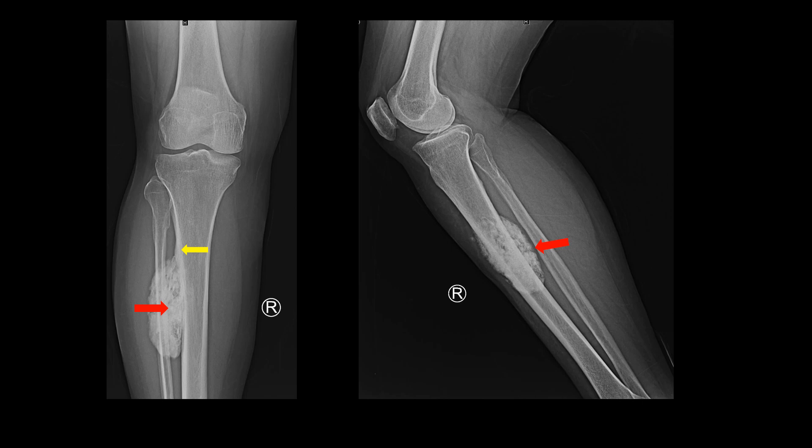With the diagnosis of parosteal osteosarcoma, we performed an MRI for this patient to know the status of marrow involvement, neurovascular bundle involvement, and the extent of the lesion.